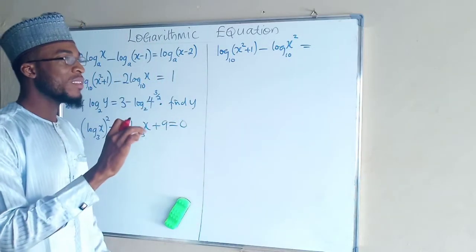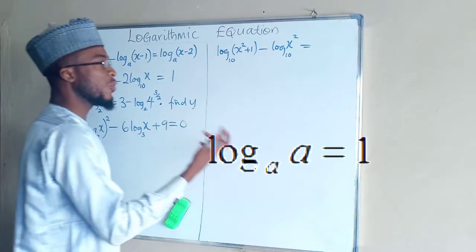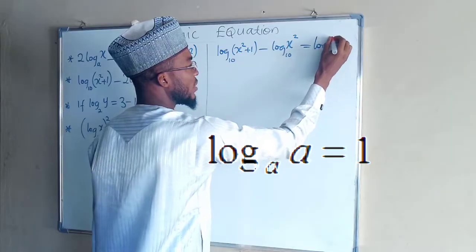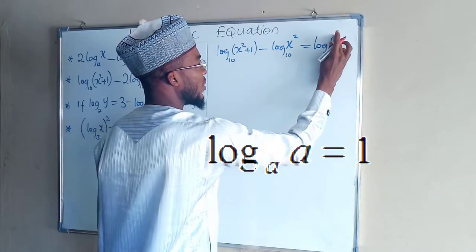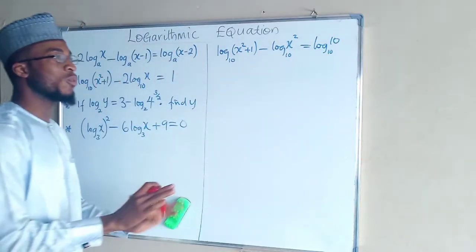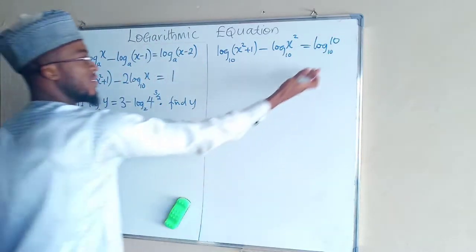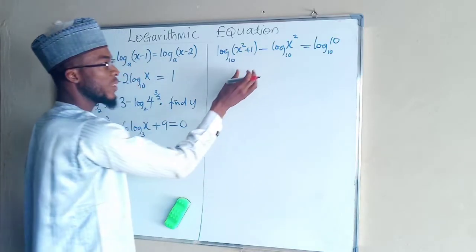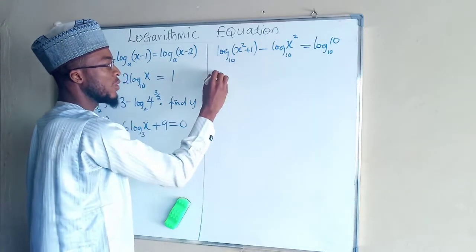A log of a number having the same base as the number is equal to 1, so we have not changed anything. This is the same thing as 1. And this one you can transform them in such a way that they have a single log.